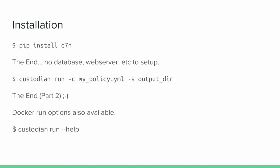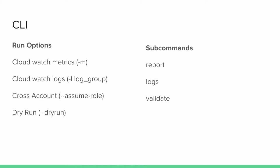What do you have to do to install this? There's a Docker run equivalent, but you can also just do pip install c7n and that's it. There's no database to set up, no web server — it's fairly stateless. If you want to run a policy, you write some YAML in a file and just run it, and you're done. There's a lot of built-in command line help. You can do CloudWatch metrics with -M, log groups, cross-account stuff with assume-role. The output directory can go into S3 as well, which is recommended.